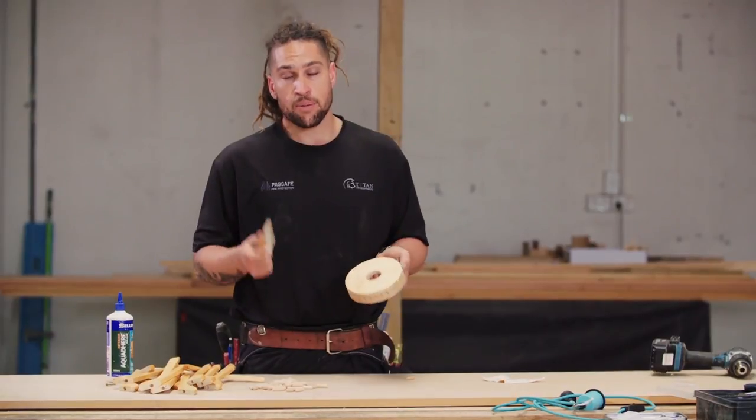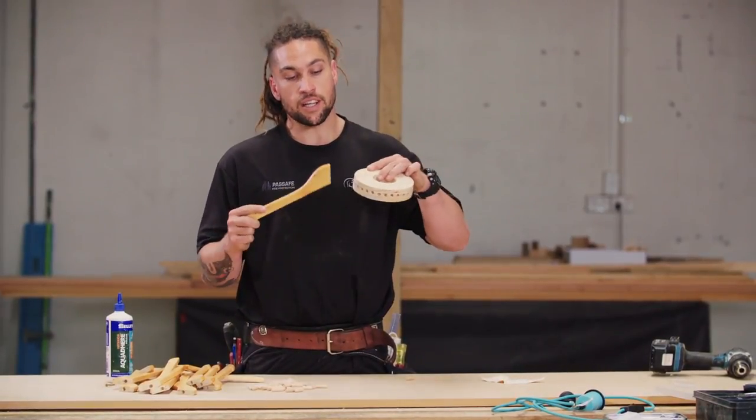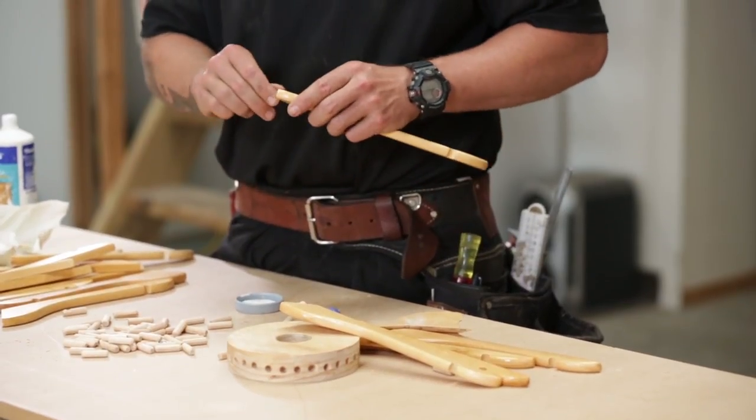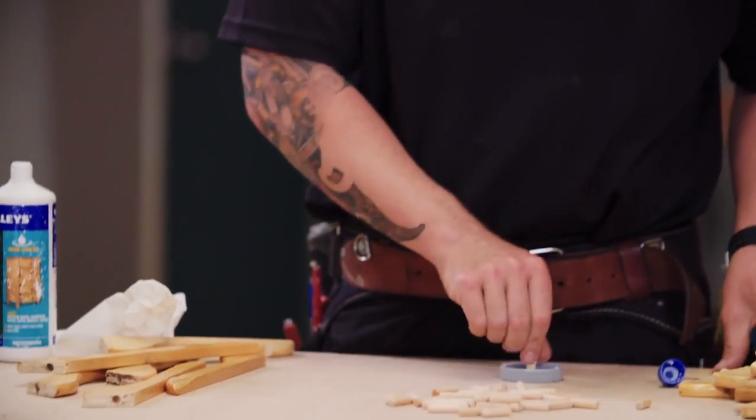Now the varnish is dried. Mea whakapiri, now to stick them together. So I'm using tēnei kapia rākei, this glue to glue our dowels. Tip our dowel in.